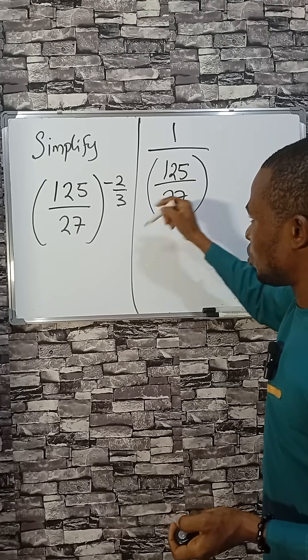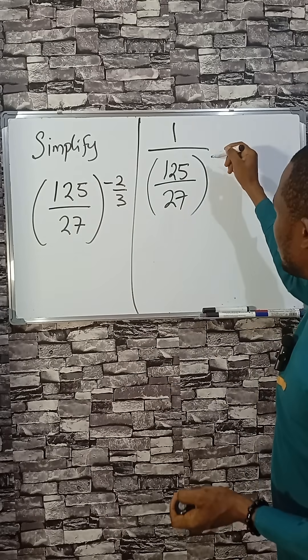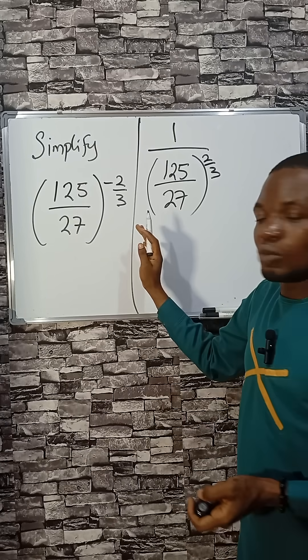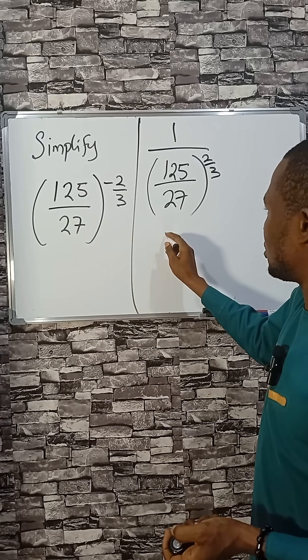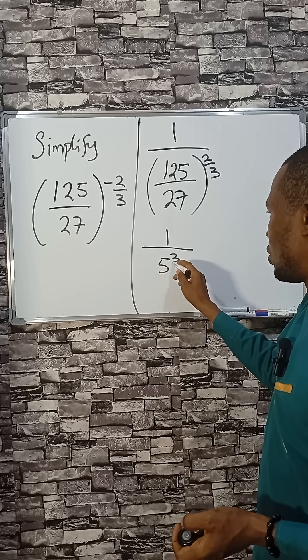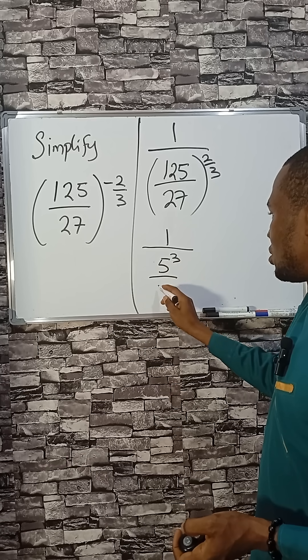Once this happens, the negative sign here goes. So that is 2 over 3. You can write 125 as, if you check closely, 125 is 5 cubed. 27 is 3 cubed.